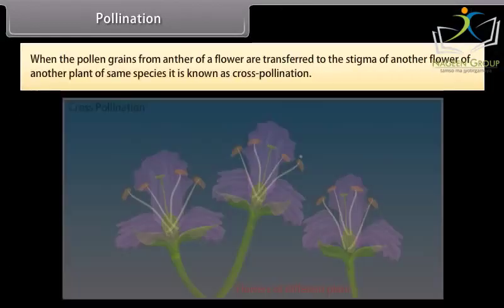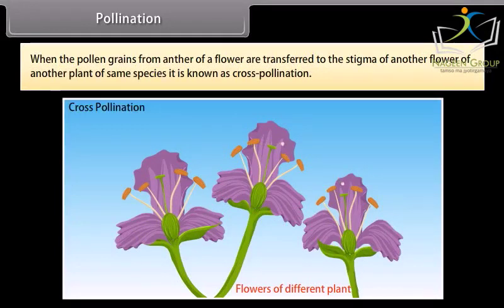When the pollen grains from anther of a flower are transferred to the stigma of another flower of another plant of same species, then it is known as cross-pollination.